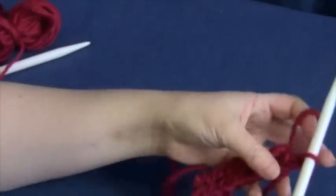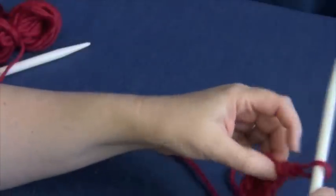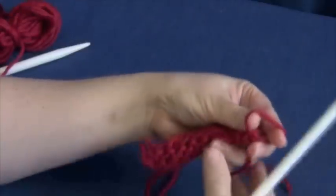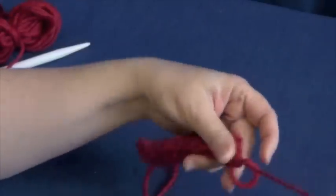We have one stitch remaining and just like a regular bind off, we're going to leave a tail and pull it through the last loop.